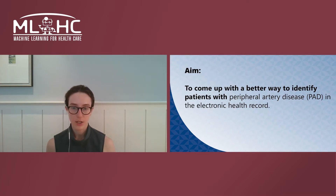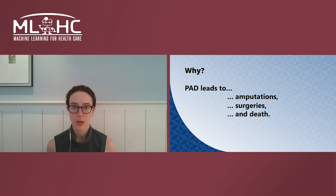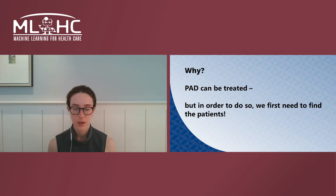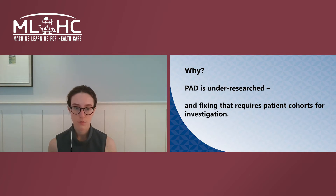The aim of this collaboration was to come up with a better way to identify patients with peripheral artery disease in the electronic health record. PAD affects about 10 million Americans and leads to heart attacks, amputations, other surgeries, and death. The care of PAD is complex and expensive, and furthermore is subject to several race, gender, and geography-related disparities. In order to improve the care of PAD, we need to be able to reliably and efficiently find patients who have it. We also need to be able to construct cohorts of patients who have PAD for further investigation.